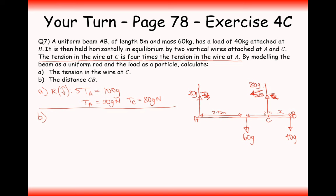The easiest way to do part B is to take moments from B. When taking moments from B, we only consider three of the forces because this 40G newton force has a distance of zero from the pivot point. Therefore the moment of this force is zero — remember, moment equals distance times force. So we ignore that 40G force since it has zero distance from where we're taking moments.